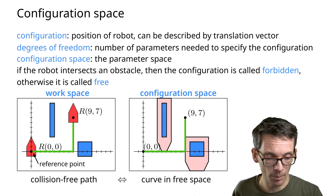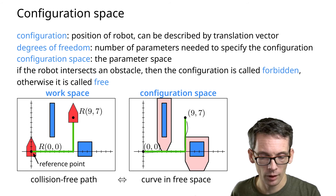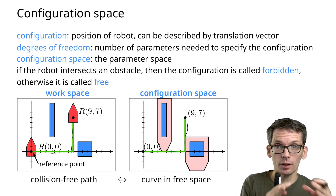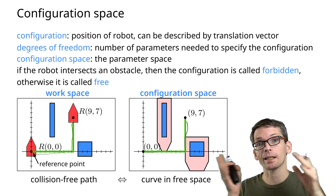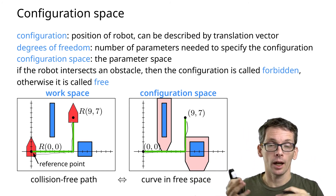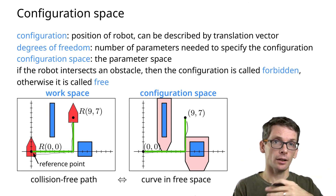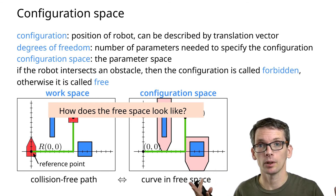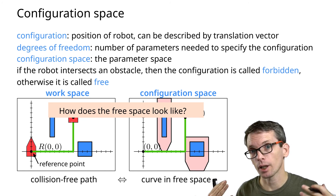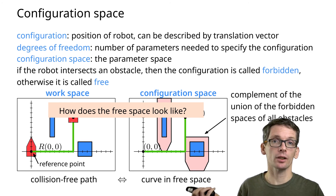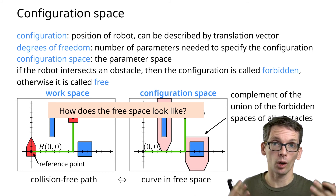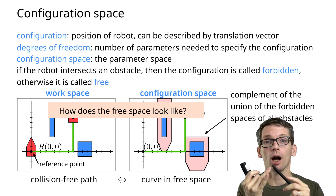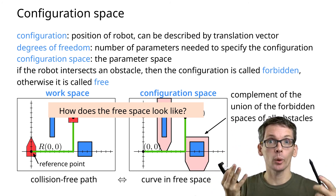If I now have a path in configuration space that avoids the blown-up obstacle, that will also be a valid path in the workspace. What I want is obstacles in configuration space such that there is a path in configuration space exactly if there is a path in the workspace. The obstacles in configuration space are also called the forbidden space, and the space that remains is called the free space. It is easier to ask how the forbidden space looks, since the free space is simply the complement of the union of the forbidden spaces of all obstacles. We need A: for an obstacle, to compute how the configuration space obstacle looks, and B: to take the union of such forbidden spaces.